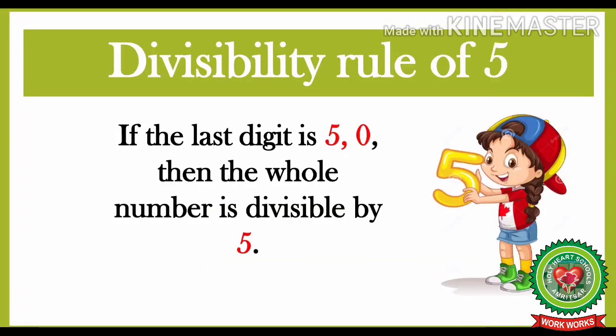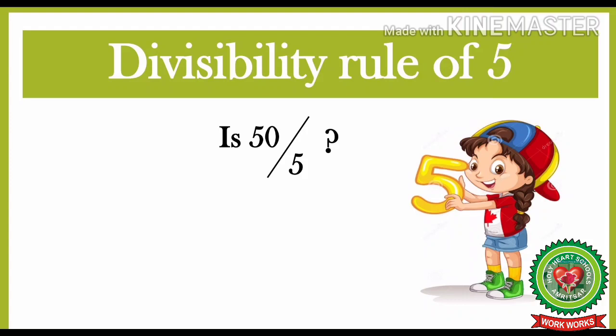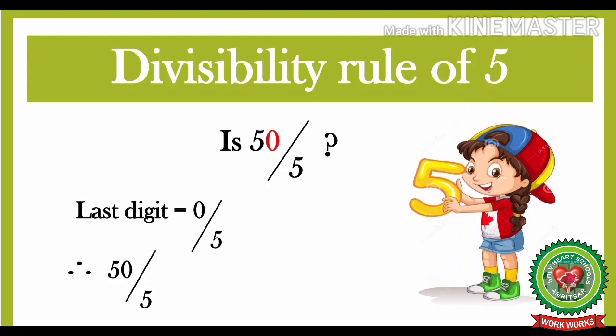Now let's discuss the divisibility rule of 5. If the last digit is 5 or 0, then the whole number is divisible by 5. Let us take one example. Is 50 divisible by 5? According to the rule, let us look at the last digit. The last digit is 0, and the rule says if the last digit is 0 or 5, then the whole number is divisible by 5. So, the last digit is 0, which means 50 is divisible by 5.